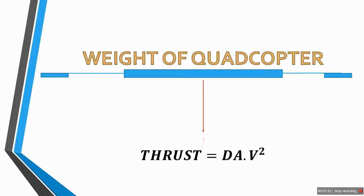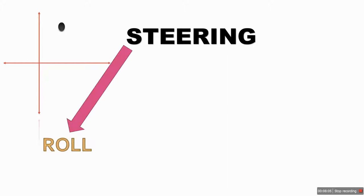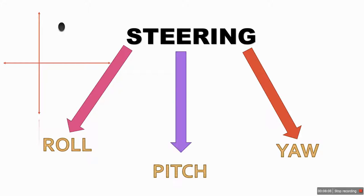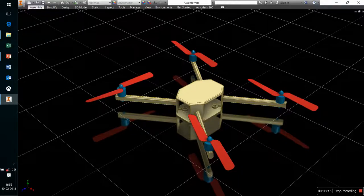Now let us talk about steering. When talking about steering, I am using three different terms: roll, yaw, and pitch. Let us consider our CAD model for better understanding. This plane on which my quadcopter is placed is the x-y plane, and the axis perpendicular to this x-y plane is the z-axis.